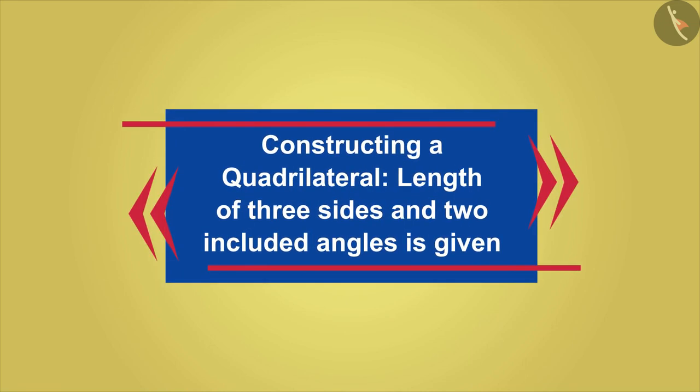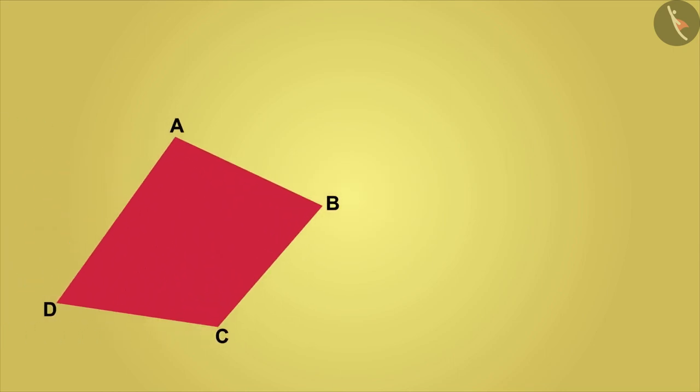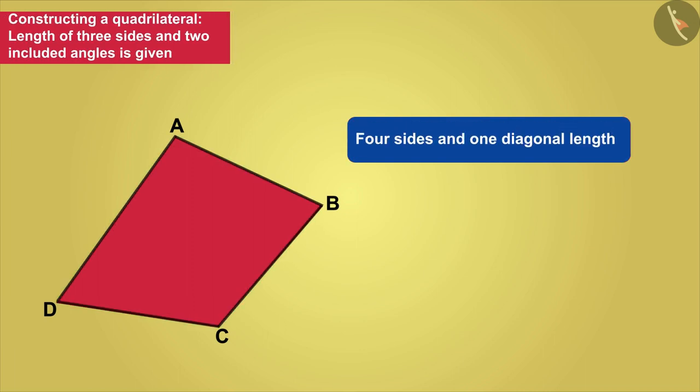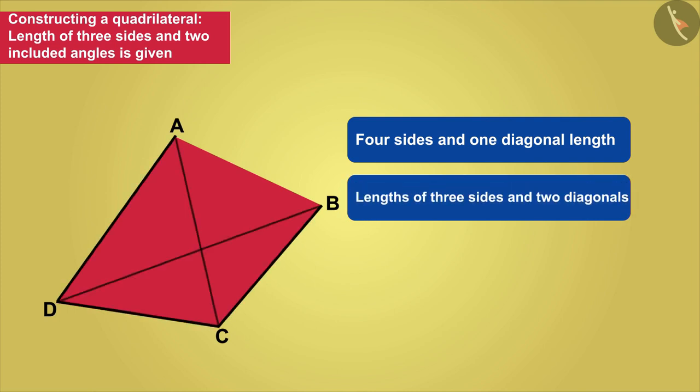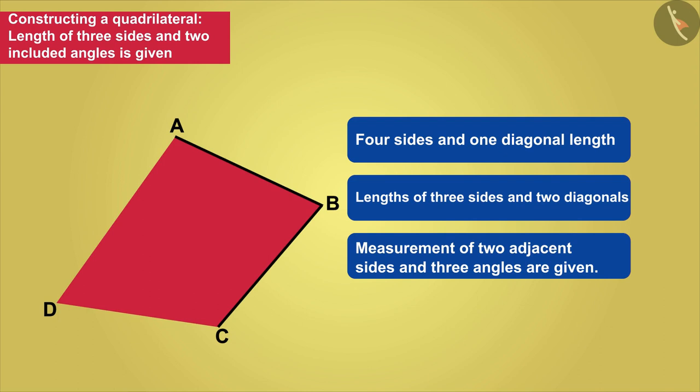Welcome all of you to this video. So far, we have learned to construct quadrilaterals in which four sides and one diagonal length, lengths of any three sides and two diagonals, or measurement of two adjacent sides and three angles are given.